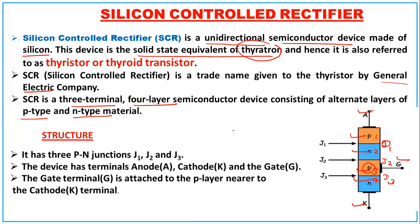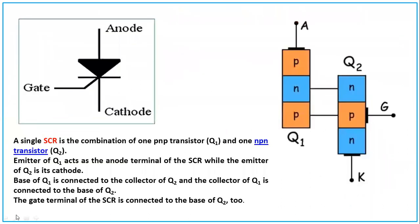This is the circuit symbol of the SCR. We have seen the P-N-P-N junction, anode, cathode, and gate. A normal diode symbol looks like this, but for the SCR you also show the gate terminal because we can control the turn-on.